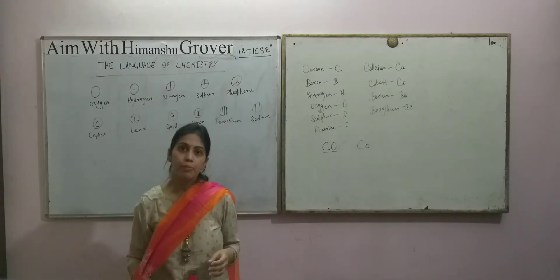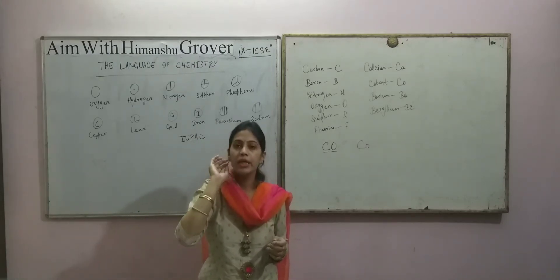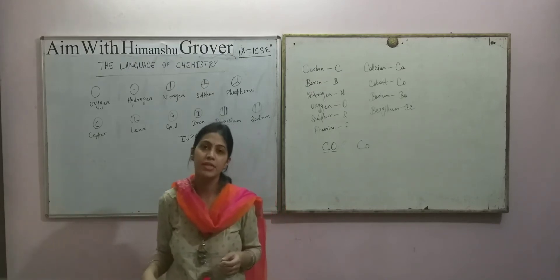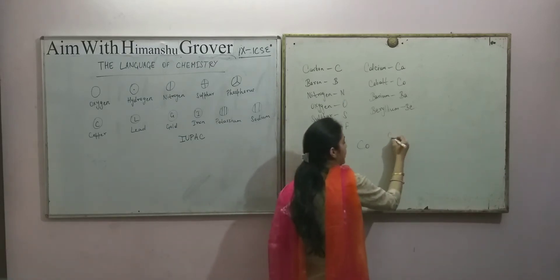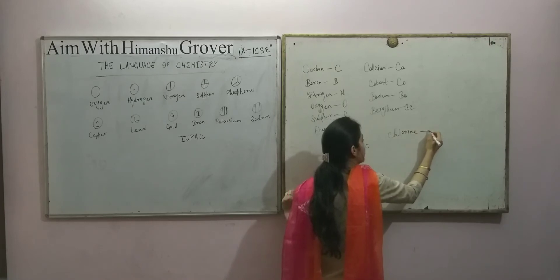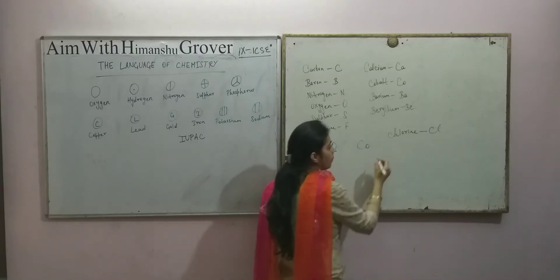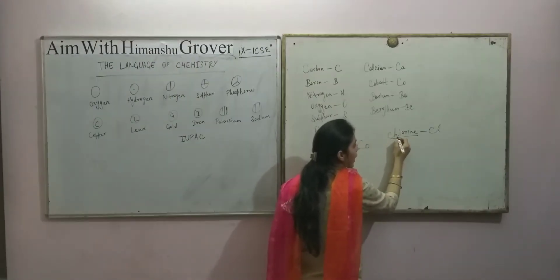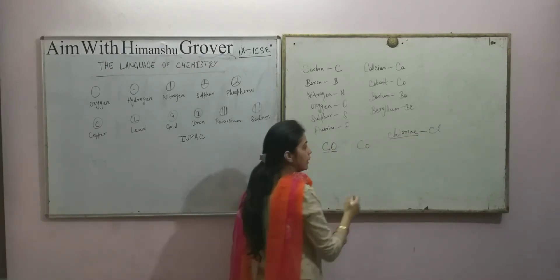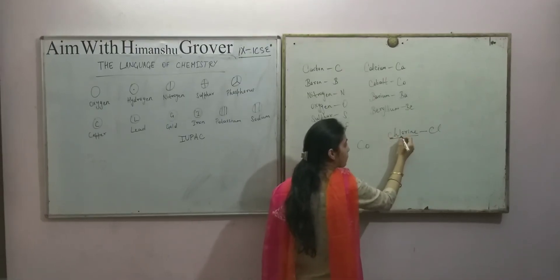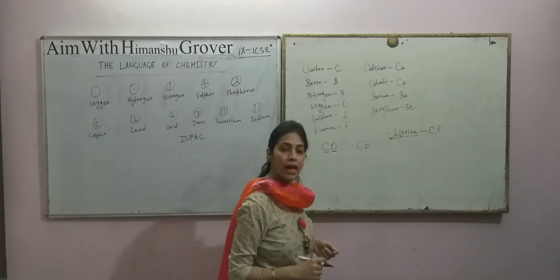The next method: some atomic symbols are represented from the sound of the name. For example, chlorine is represented as Cl — capital C and small l. But the spelling of chlorine is C-H-L-O-R-I-N-E. The first two letters are not used here; the letters used are C and L, representing the sound of the name of that element.